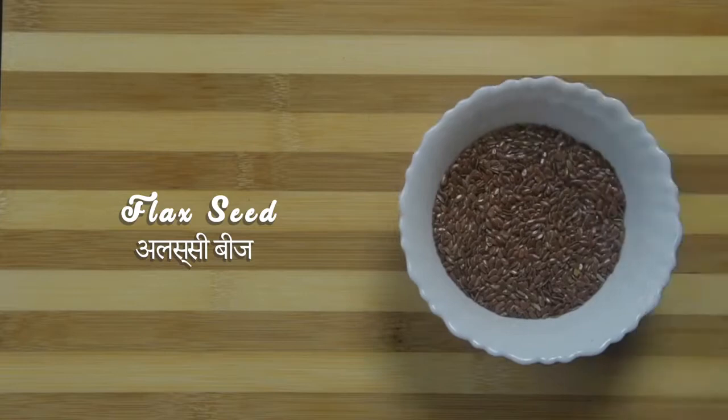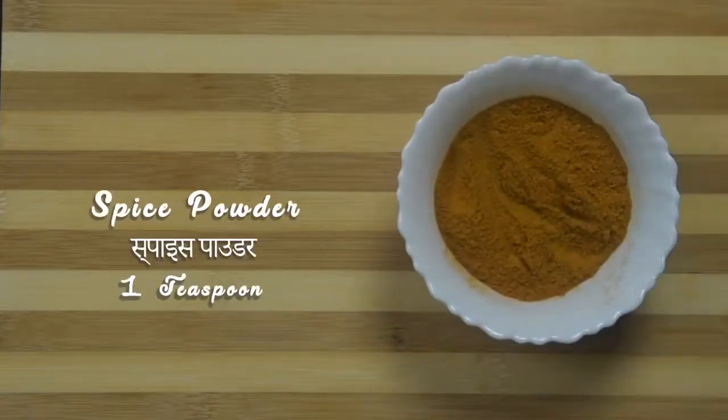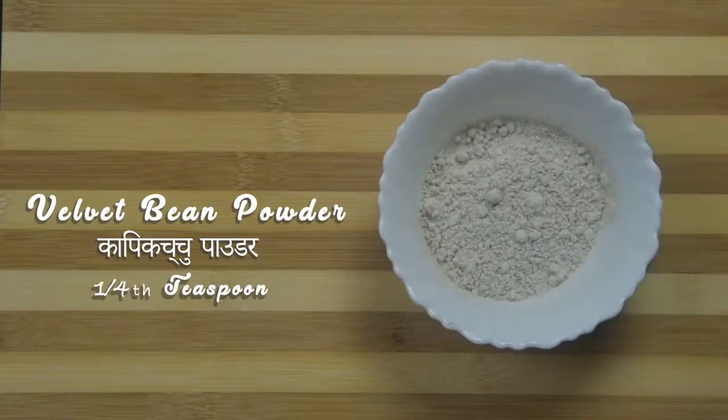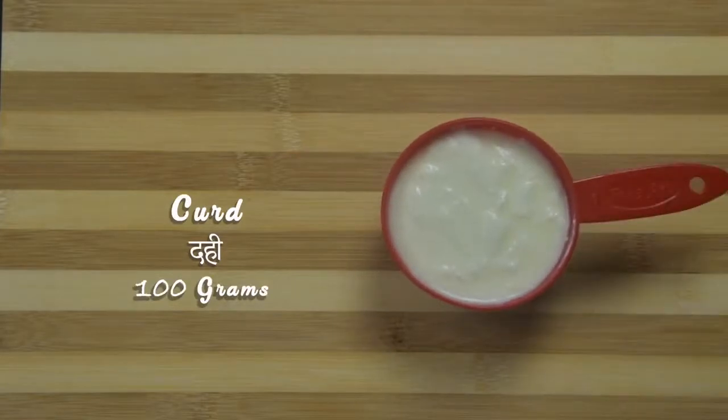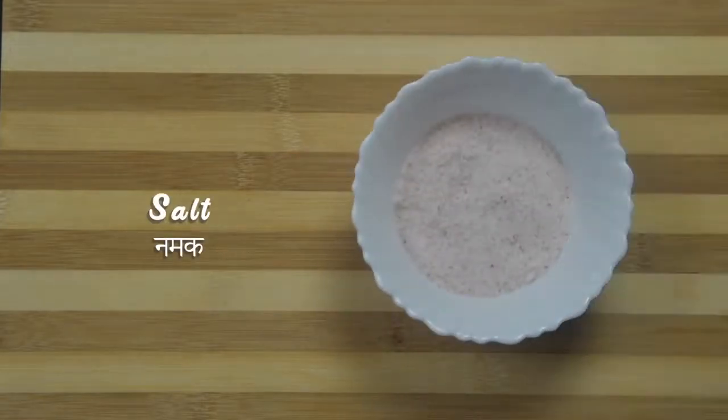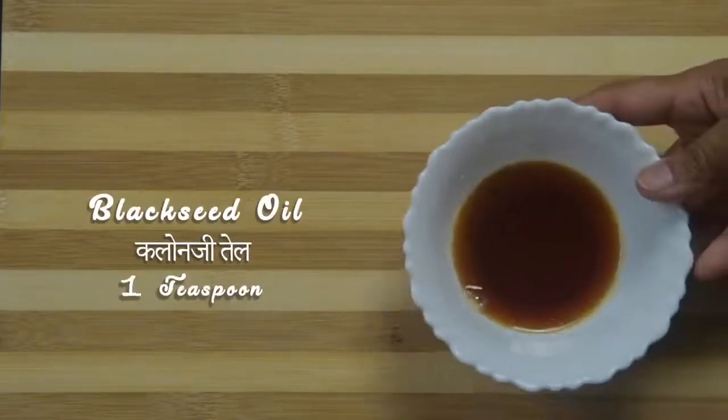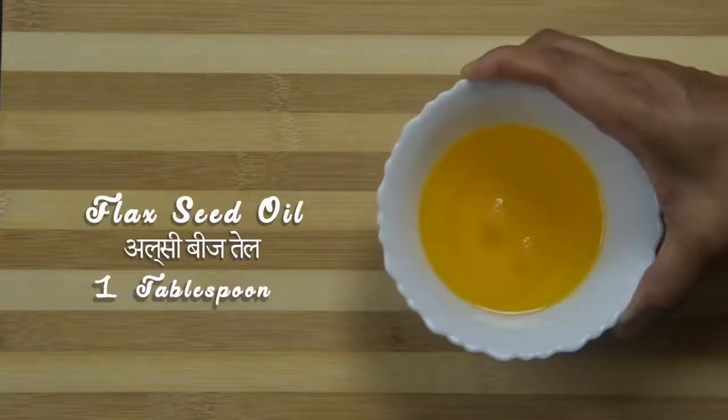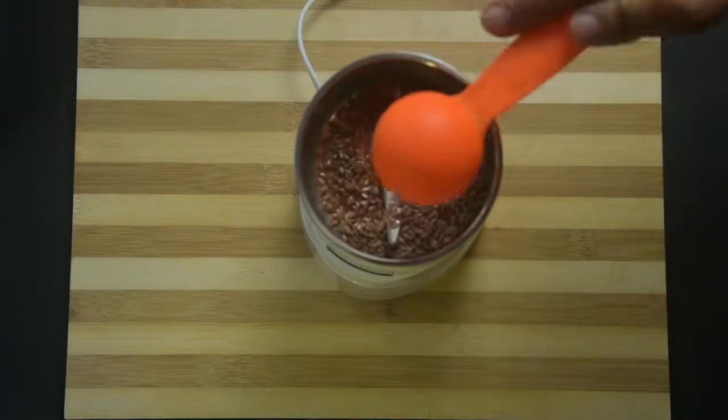Ingredients to make flax drink: 1 tablespoon of flax seeds, 1 teaspoon of spice powder, 1/4 teaspoon velvet bean powder or kapikacchu powder, 1 cup curds, salt to taste, half to three-fourths cup water, 1 teaspoon cold-pressed black seed oil or kalonji oil, and 1 tablespoon cold-pressed flax oil. Take flax seeds into a coffee grinder or small jar of a mixer grinder.